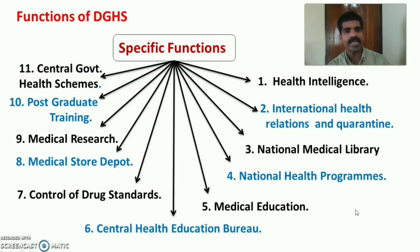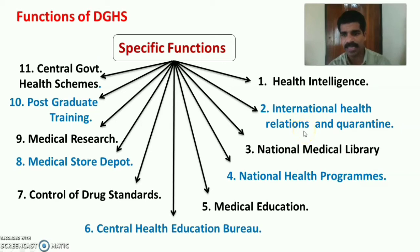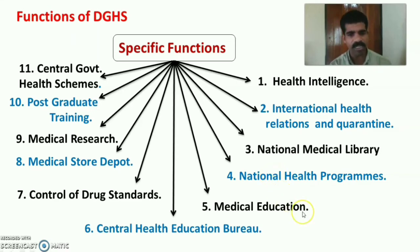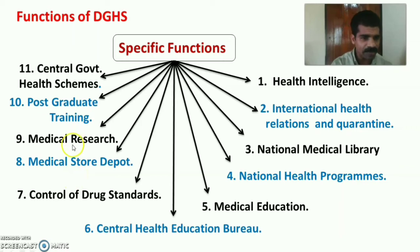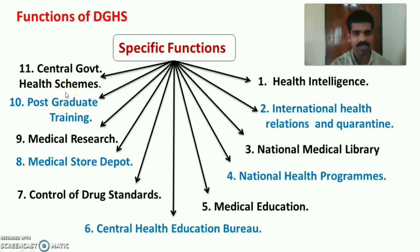The 11 specific functions of DGHS are: 1. Health Intelligence, 2. International Health Relations and Quarantine, 3. National Medical Library, 4. National Health Programme, 5. Medical Education, 6. Central Health Education Bureau, 7. Control of Drug Standards, 8. Medical Store Depot, 9. Medical Research, 10. Postgraduate Training, 11. Central Government Health Schemes.